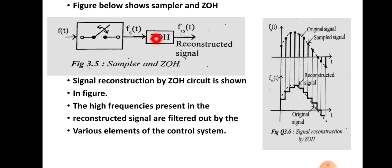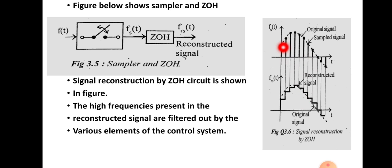Our original signal F(t) can be obtained from these samples by using this zero-order hold circuit. Here is the illustration of the reconstruction process. After the sampling process, the F(t) signal will be like this — that means we will be getting samples of the signal, which are the values of the signal at particular intervals.